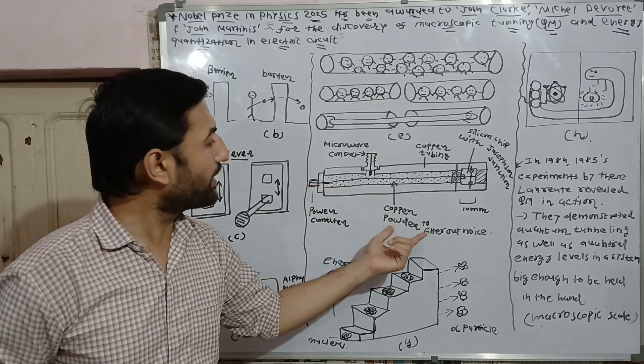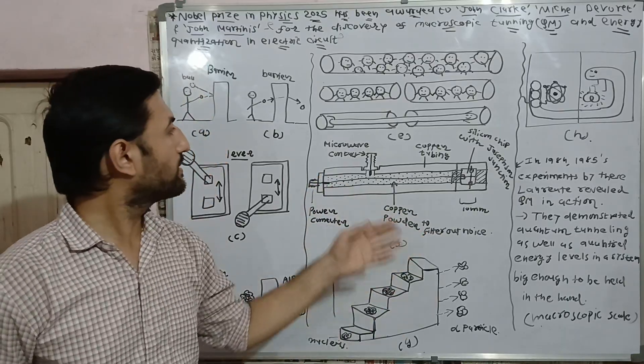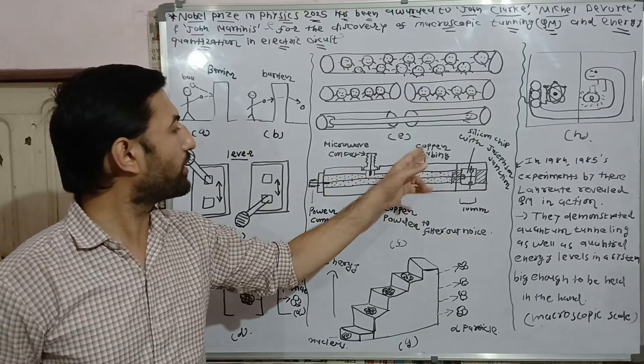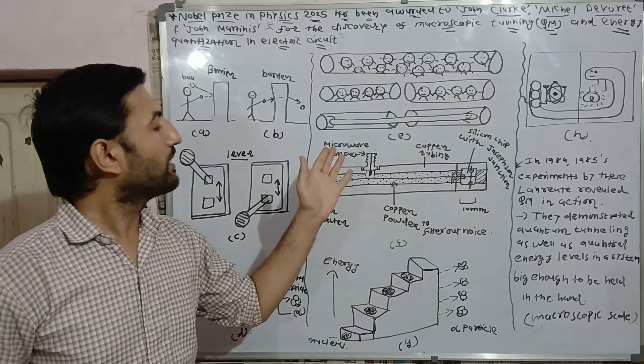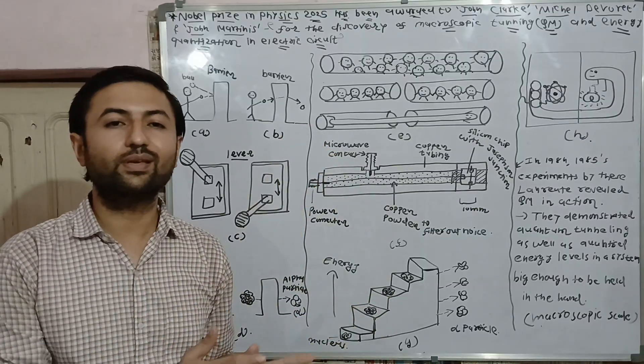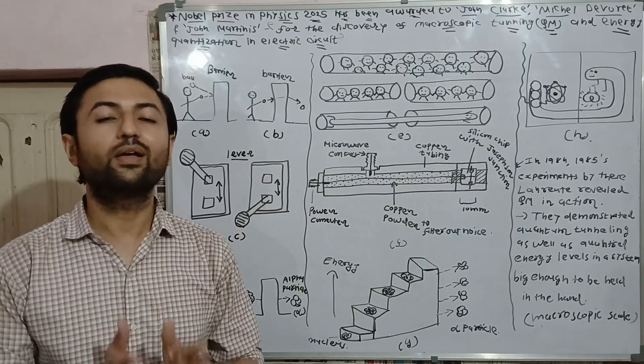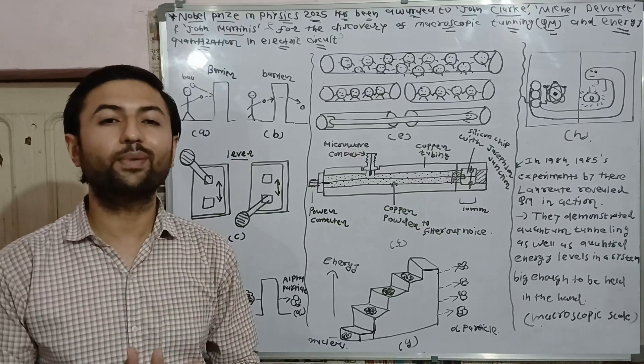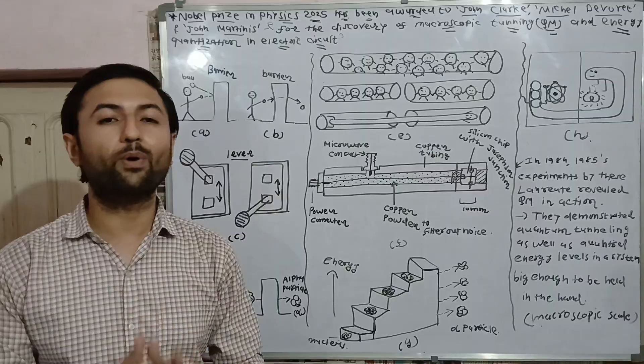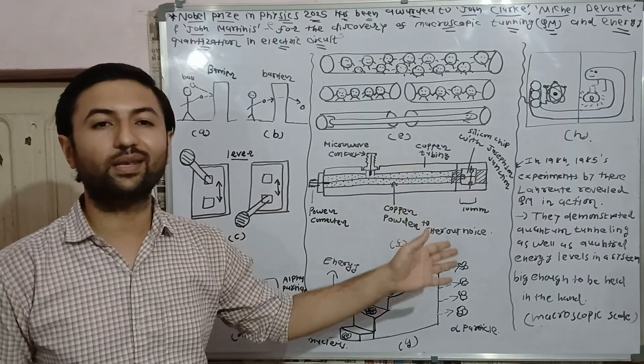In this rectangular electrical circuit, this superconducting material is hardly one centimeter in size. This is the copper powder to filter out noise, this is microwave contact, this is copper tubing, and this is power connector. Through this electrical circuit, these physicists demonstrated that macroscopic quantum mechanical tunneling is possible by considering billions of Cooper pairs in superconducting material.